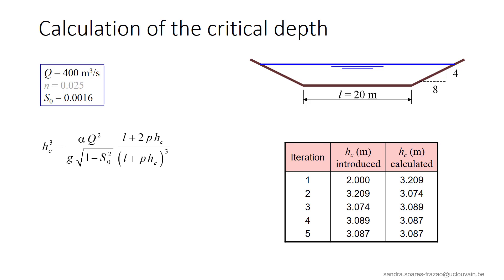We will illustrate the process by an example of a trapezoidal cross-section. The discharge is 400 m³ per second and the bed slope is 1.6 per 1000. The Manning friction coefficient of the channel is also indicated, but it will be useless — we see in the expression for Hc that the critical depth is independent of friction. Starting the iterations with Hc equal to 2 m, we rapidly converge towards a value of 3.087 m.